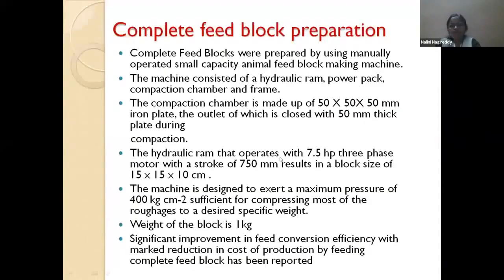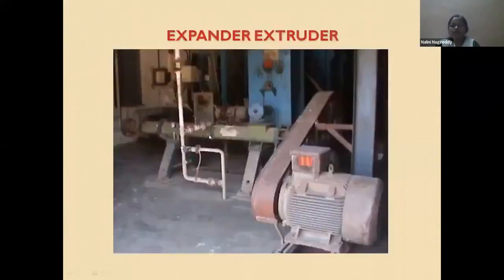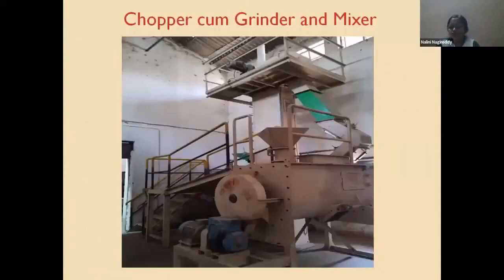For complete feed block preparation, after preparing the mash, it is subjected to compaction using hydraulic pressure, requiring a 7.5 HP motor. For expander-extruder pelleting, because steam is required, a higher-capacity motor of around 50 HP is needed. For the grinder-and-mixer combination, a 20 HP grinder and 7.5 HP mixer can be used. Grinding capacity is around 200 to 250 kg of crop residues per hour; the mixer can handle 600 to 800 kg per hour.